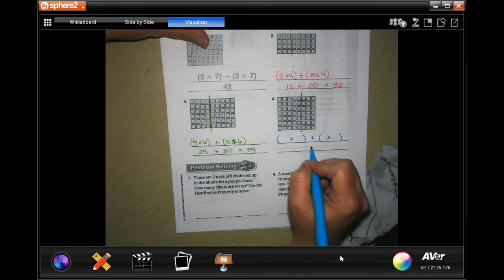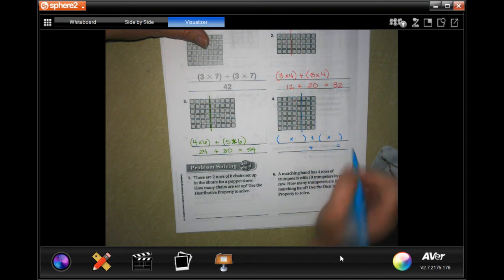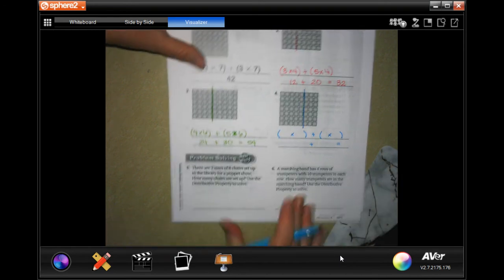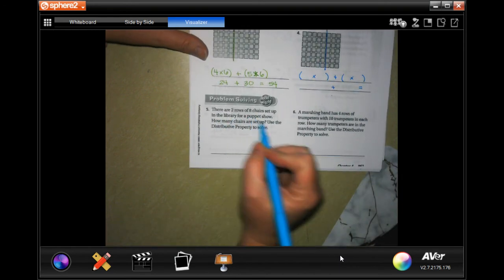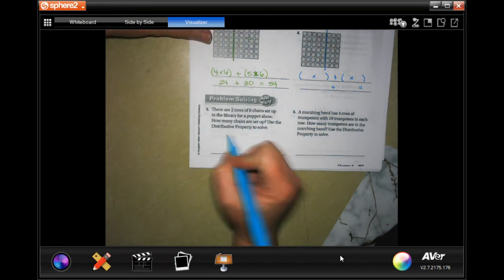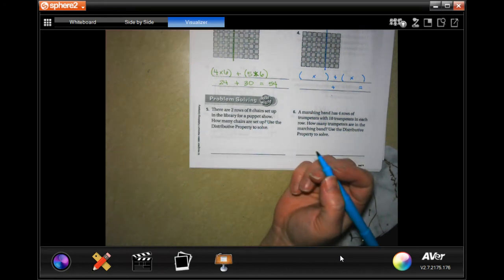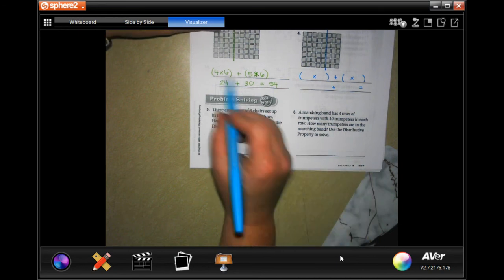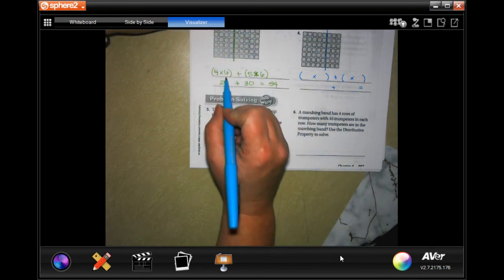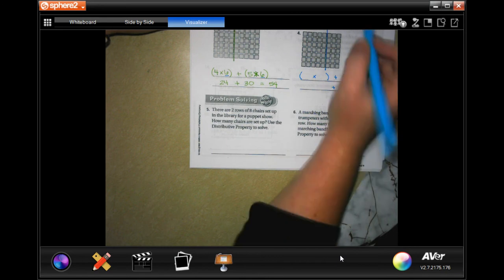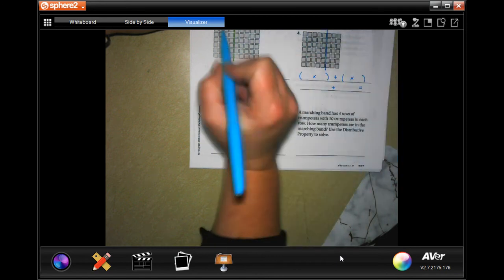Add them up and give the answer. All right, there are two rows of eight chairs set up in the library for a puppet show. How many chairs are set up? Use the distributive property to solve. That's all this is—we're distributing the same six on this one, the same four on this one, the same seven on that one.